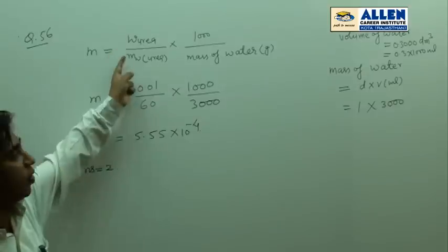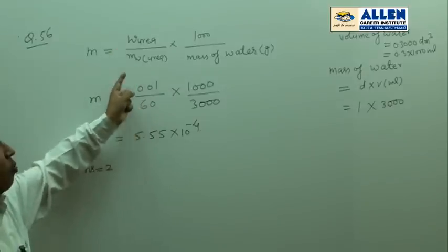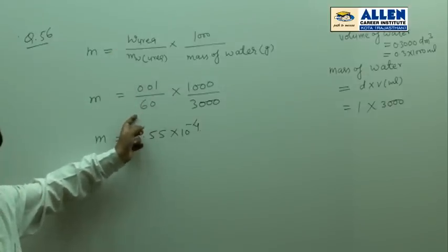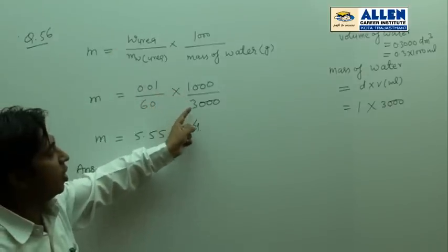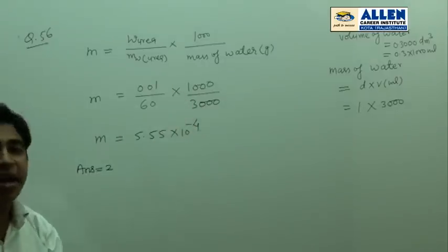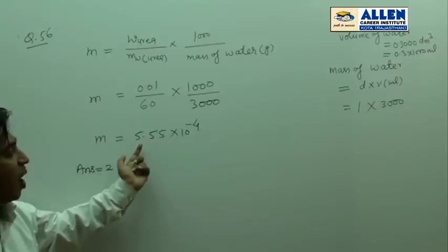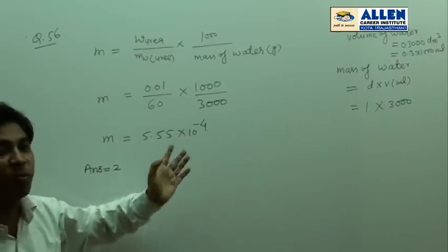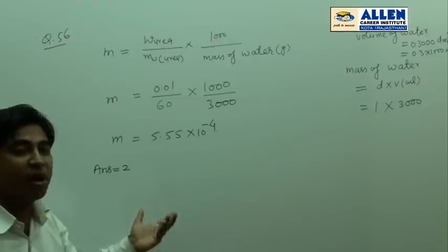Molarity equals weight of urea, given 0.01, molecular mass of urea 60, into 1000 upon 300 mass of water in grams. So molarity equals 5.55 times 10 to power minus 4, option number 2.